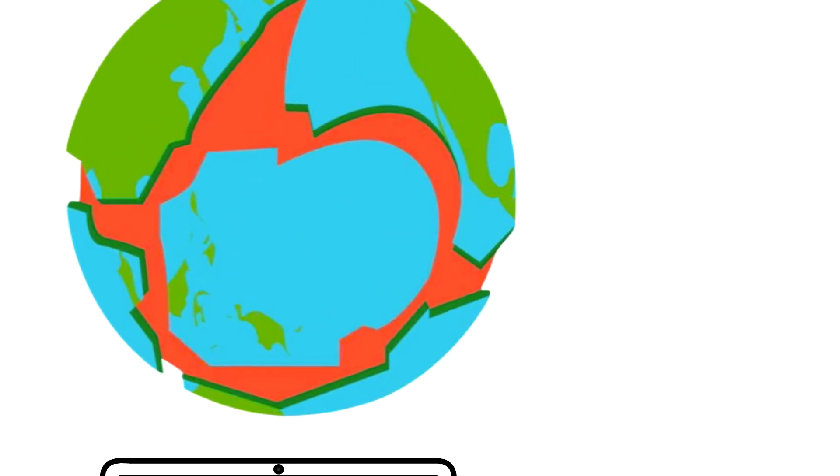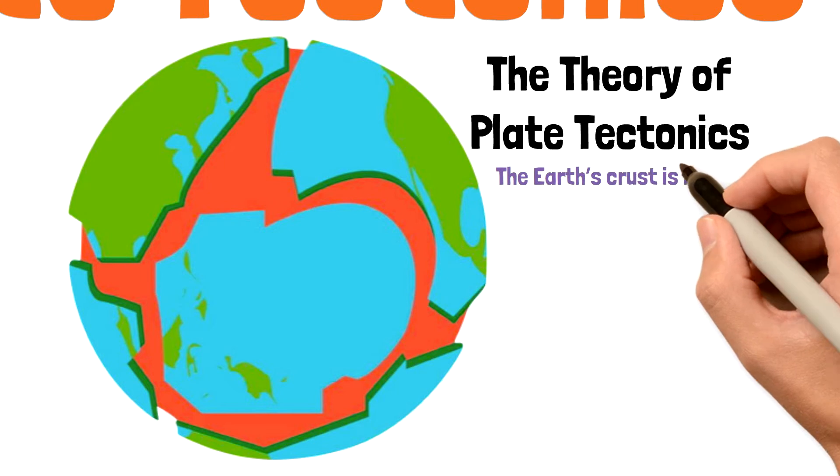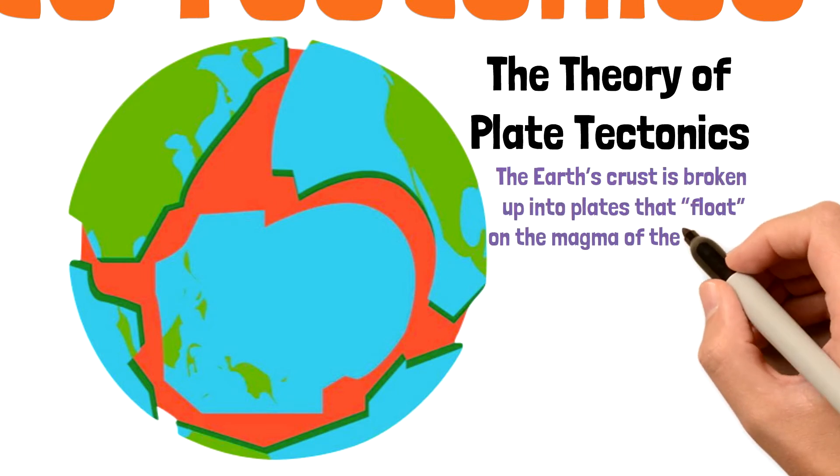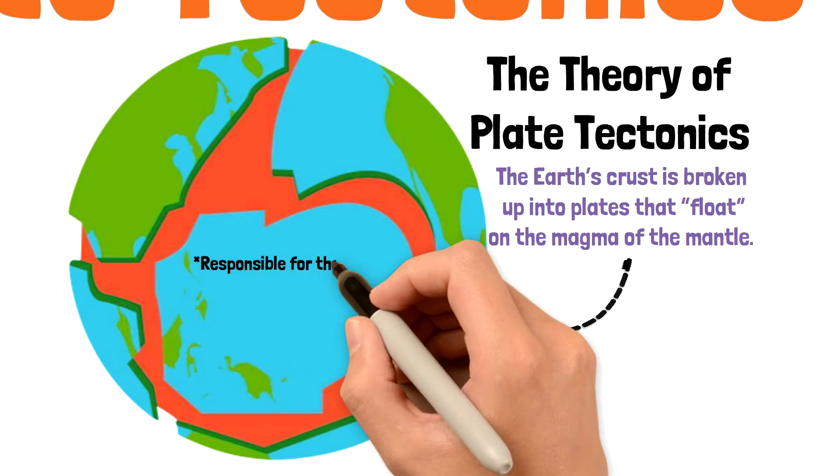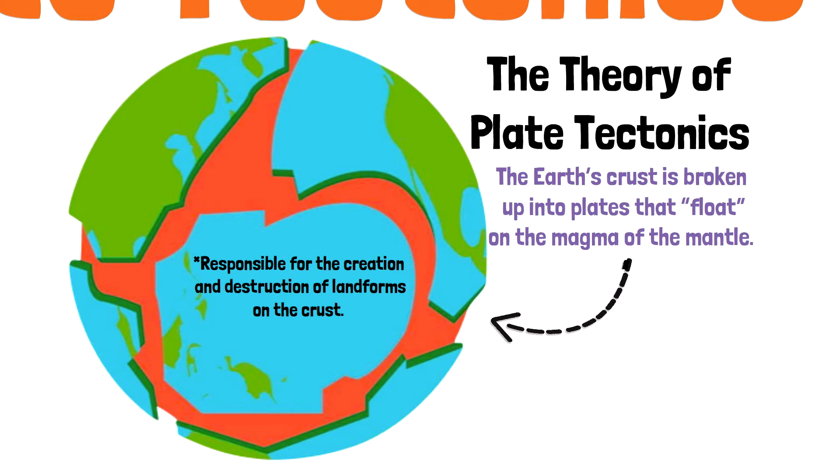First, let's discuss the theory of plate tectonics. The theory of plate tectonics is a theory that states the Earth's crust is broken up into plates that float on the magma of the mantle. This theory is responsible for the movement of plates, as well as the creation and destruction of many landforms on the crust.